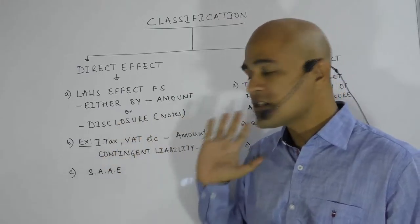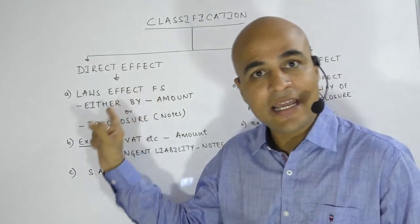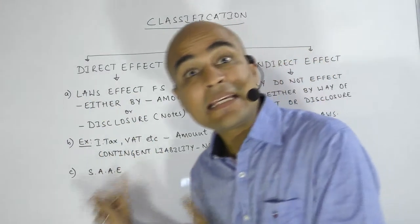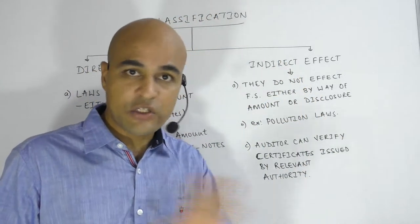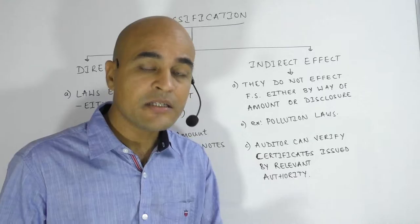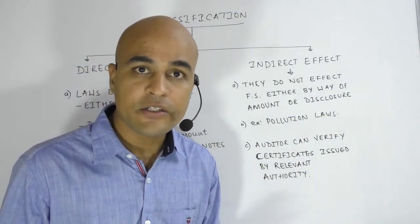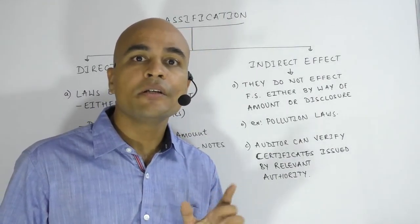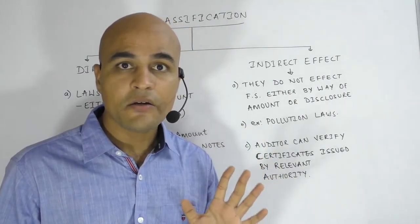In a nutshell: if the financial statements are affected either by amount or by way of disclosure, it will be termed as laws and regulations having direct effect, and the auditor will have to obtain audit evidence. In the case of laws and regulations which do not affect the financial statements — for example, pollution laws — all the auditor has to do is verify the certificate issued by the relevant authority.